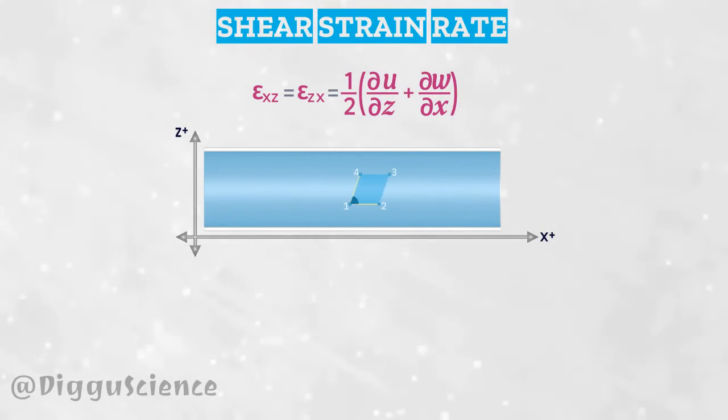By the same analogy, in the x-z plane, the shear strain rate is epsilon of x-z equal to one-half of the sum of the partial derivatives of u with respect to z and the partial derivatives of w with respect to x.